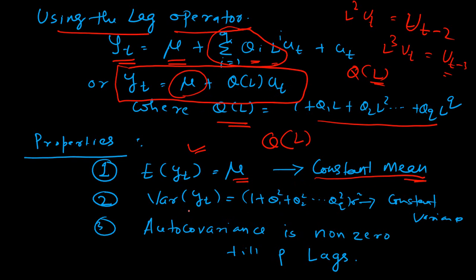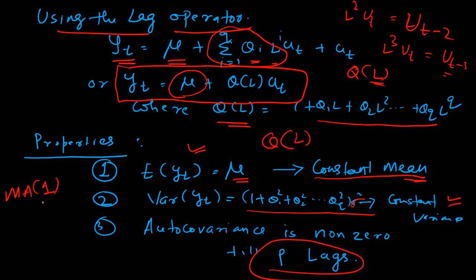The variance of an MA series is also constant. The variance of YT is given by (1 plus theta_1 squared plus theta_2 squared up to theta_q squared) multiplied by sigma squared, which is also constant. So we have constant mean, constant variance, and the autocovariance is non-zero only up to Q lags. For an MA1 process, the autocovariance is non-zero only at the first lag and zero thereafter. For an MA2 process, the first two lags have non-zero autocovariance, and the rest are zero.